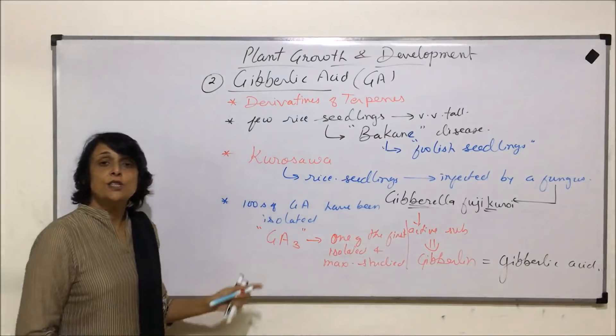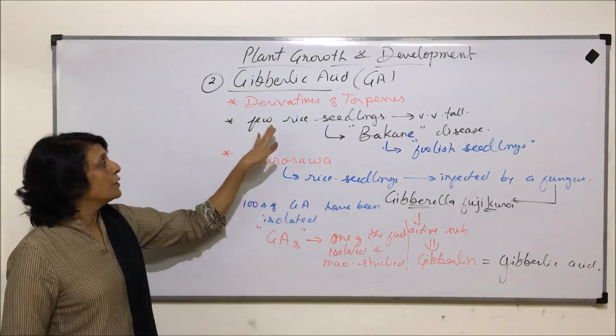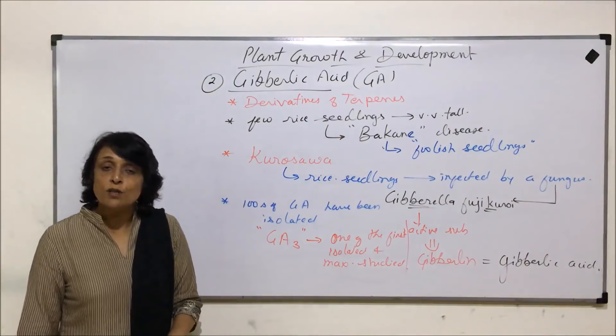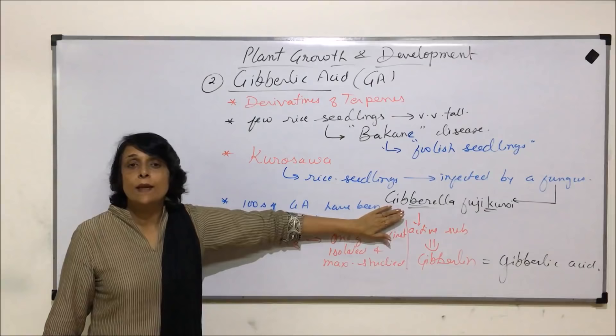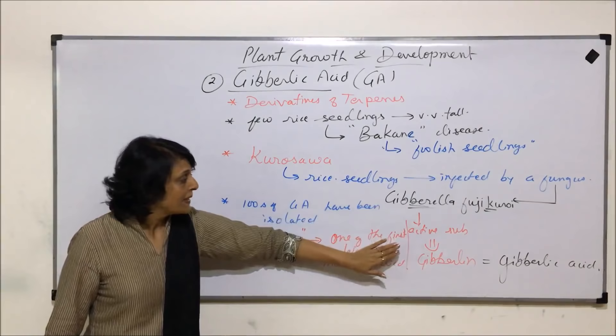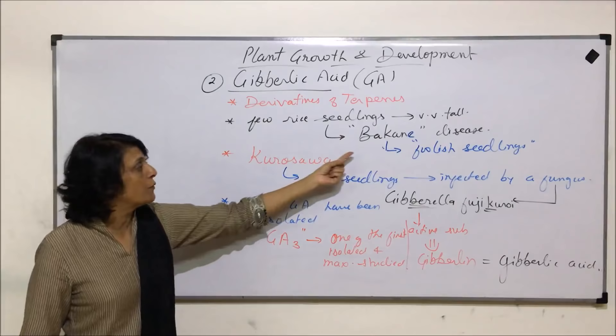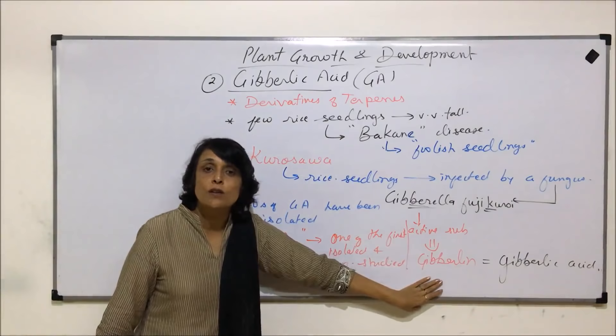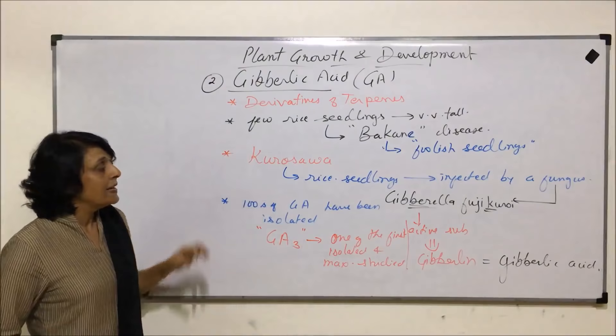Maximum studied means the effect of GA3 has been studied the most. The discovery of gibberellins goes back to the observation made by farmers in Japan. Later, when these plants were studied, they were found to be infected by the fungus Gibberella fujikuroi. Kurosawa found the active chemical responsible for this behavior, which was called gibberellins and later identified as gibberellic acid.